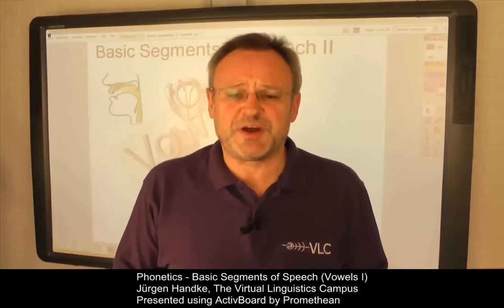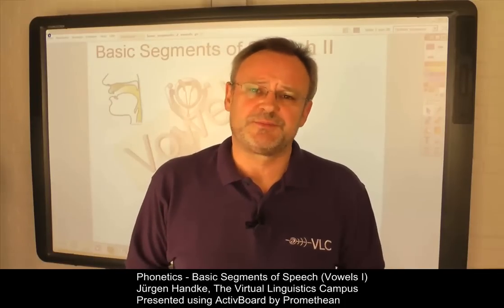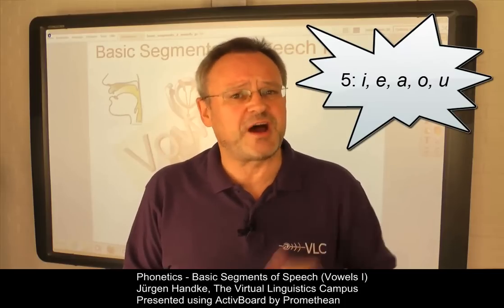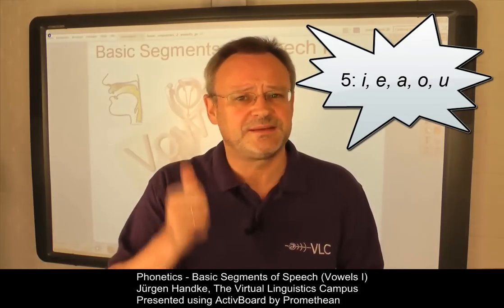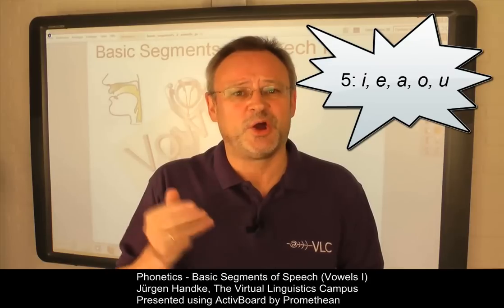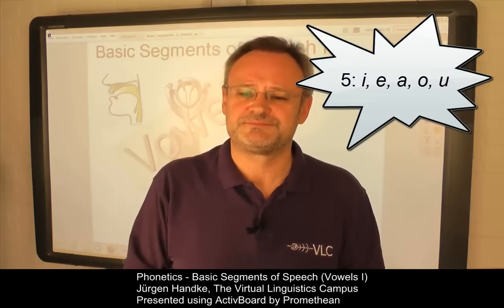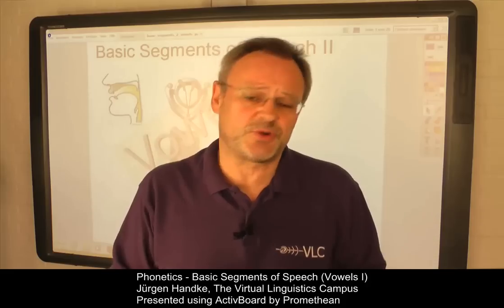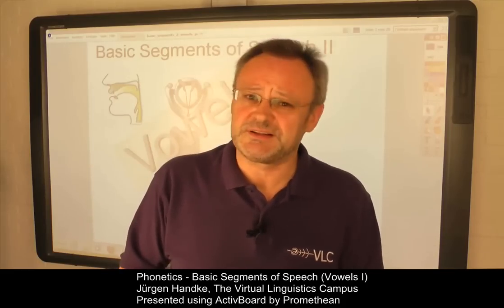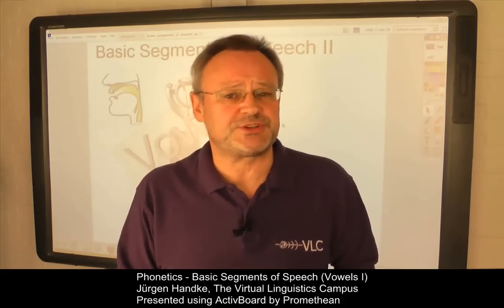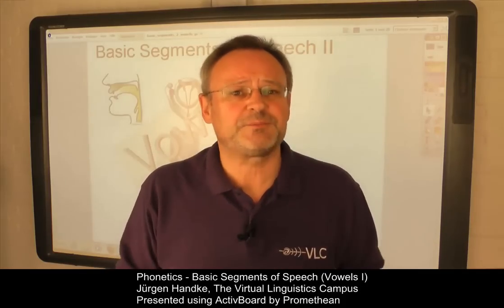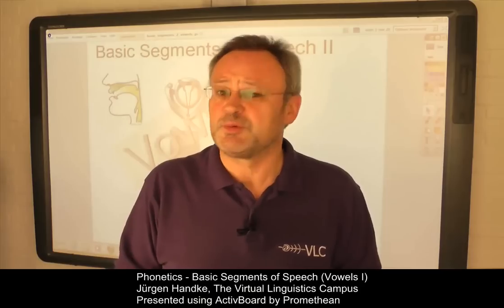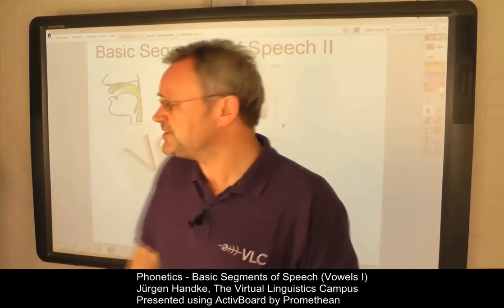How many vowels do we find in English? Many students with no prior knowledge in phonetics would say five: I, E, A, O and U. However, this answer is based on orthography, with little or no relationship to speech. If we apply articulatory phonetic terms, we are confronted with a completely different definition.